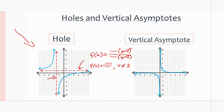For the vertical asymptote at x = −3: the function will also have a factor of (x + 3) in the denominator. An x value of −3 makes this factor zero, which makes the whole denominator zero. That's why we have a vertical asymptote at x = −3 — the function is undefined there.